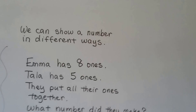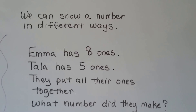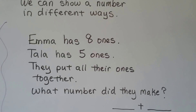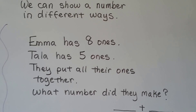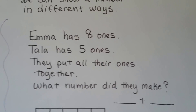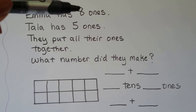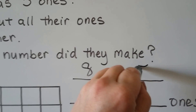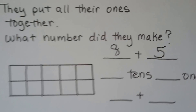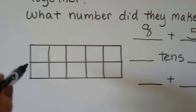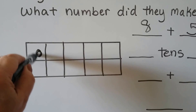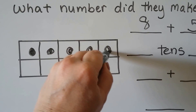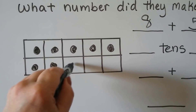We can show a number in different ways. Emma has 8 ones. Tala has 5 ones. They put all their ones together — what number did they make? So we can even do more than 3 ways; we can make many different ways. There are 8 ones and 5 ones, so we have 8 plus 5. We can put Emma's 8 ones: 1, 2, 3, 4, 5, 6, 7, 8.